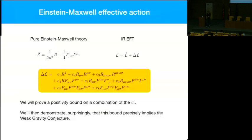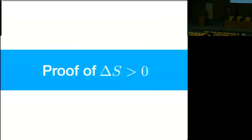The action we're writing down is just the most general effective theory of a photon and graviton. There are three R-squared terms, three RF-squared terms, and two F-to-the-fourth terms. What we'll do for the bulk of this talk is prove a family of positivity bounds on the CI — the higher dimension operator coefficients — which a priori won't sound like it has anything to do with the weak gravity conjecture, but the weak gravity conjecture will come in at the end in a somewhat surprising way.